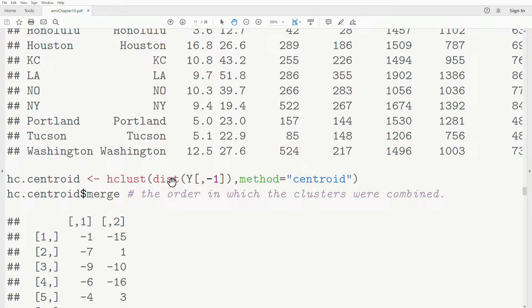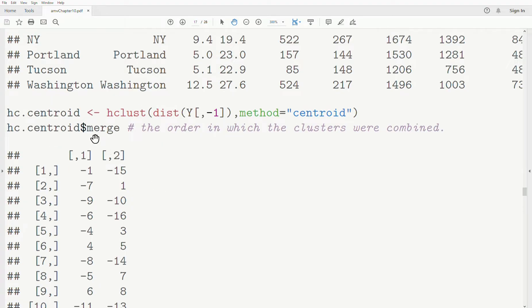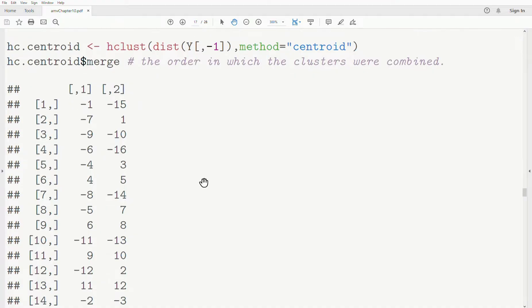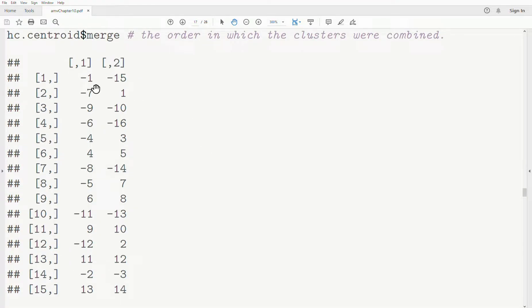Now in this method, there's what's called a merge. So that's part of the information that's sent to this variable hc.centroid. And it's the order in which variables were merged. So if it's a negative value, it means observation. If it's a positive, it's a cluster. So for example, in step one, observation one and observation 15 were merged into a cluster. A new centroid was of course calculated. In step two, observation seven and the cluster created in step one, because it's positive, it means cluster and it's this cluster. Those two clusters are combined.